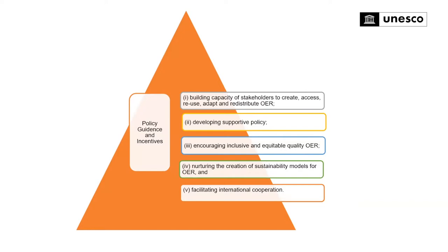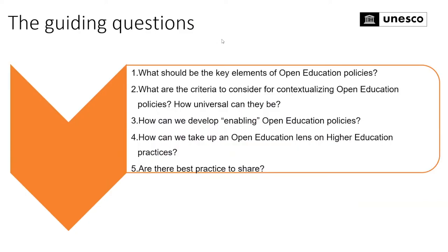You'll see that number two is developing supportive policy, but our discussion today goes beyond just that — it looks at how policy and incentives can support all five areas of action foreseen in the UNESCO OER recommendation. The guiding questions on the screen will be the structure of our discussion. We'll look at key elements of open education policies, criteria for contextualizing open education policies, enabling open education policies, and an open education lens on higher education practices, and then we'll discuss best practices.